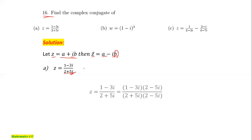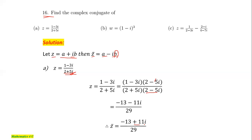We obtain (1 minus 3i)(2 minus 5i) over (2 minus 5i)(2 minus 5i). The simplified form of this expression is (minus 13 minus 13i) over 29. Therefore, the complex conjugate of this number is (minus 13 plus 11i) over 29 — it is plus because the imaginary part was minus. This is the complex conjugate of (1 minus 3i) over (2 plus 5i).